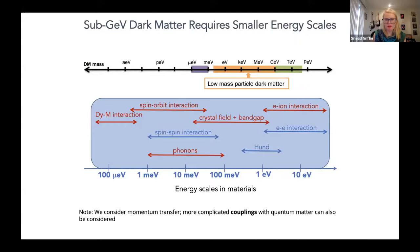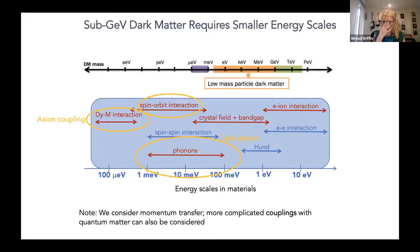Today I'll discuss three examples: spin-orbit interactions for dark matter detection, phonons for dark matter detection, and briefly axion coupling — where we can design a material with a Dzyaloshinskii-Moriya-type interaction that is sensitive to this sort of coupling. I'll start with the spin-orbit interaction type of detection idea for dark matter.